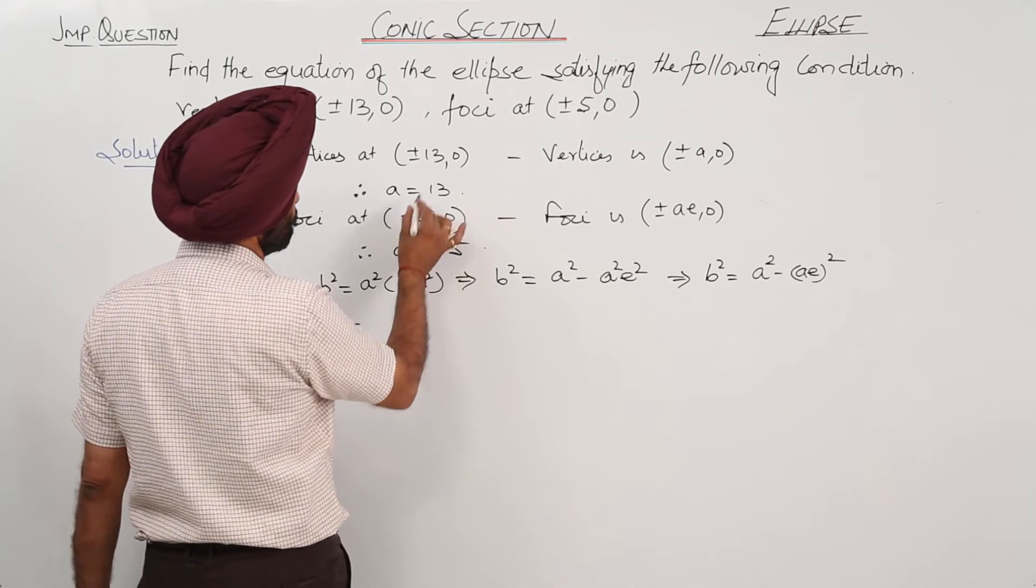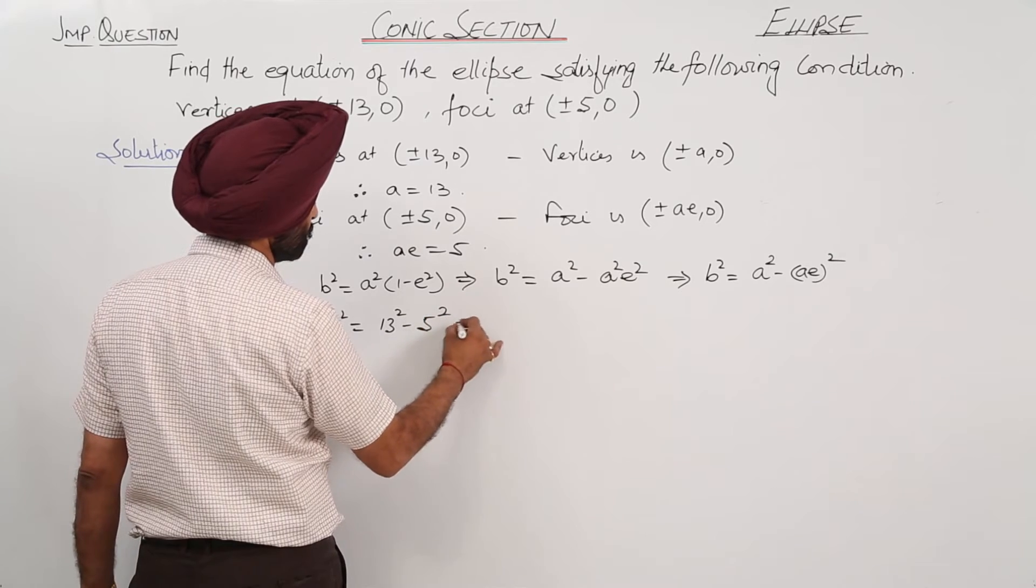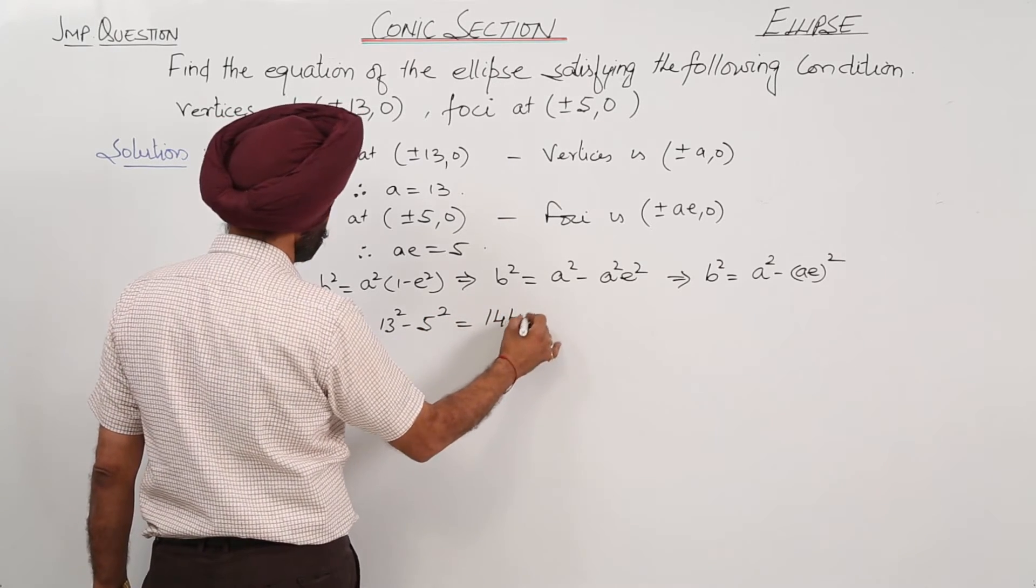So, b square is, a is 13, 13 square minus 5 square. This is 144.